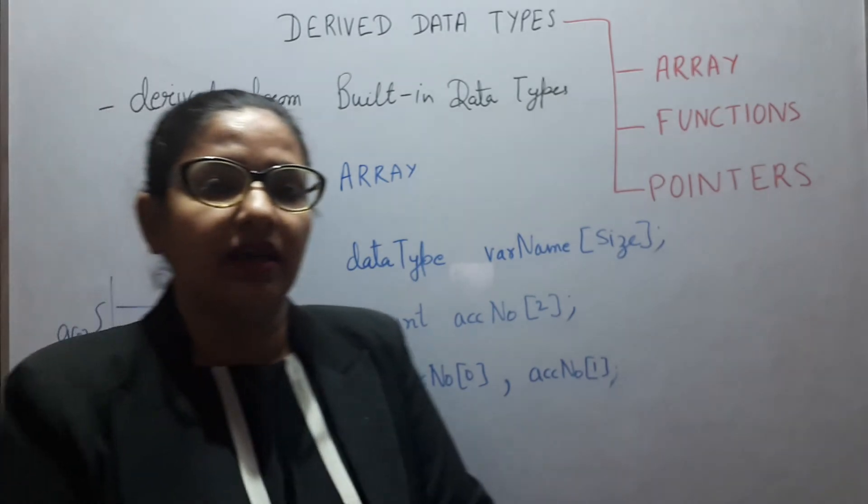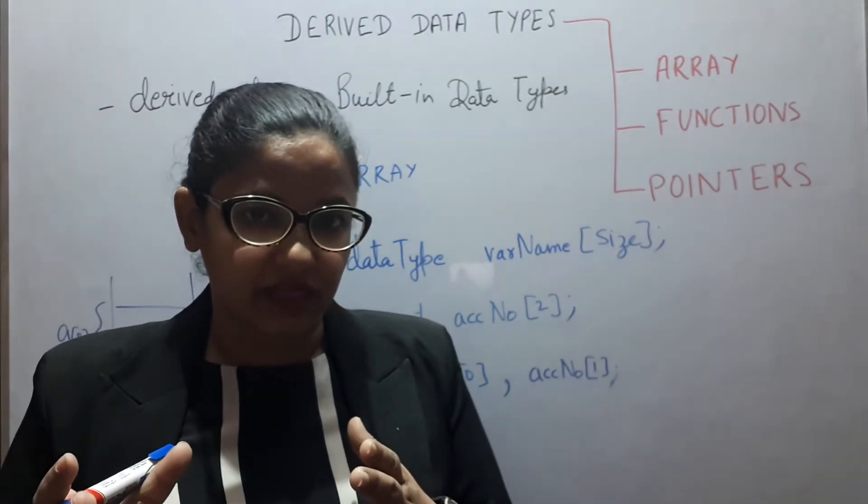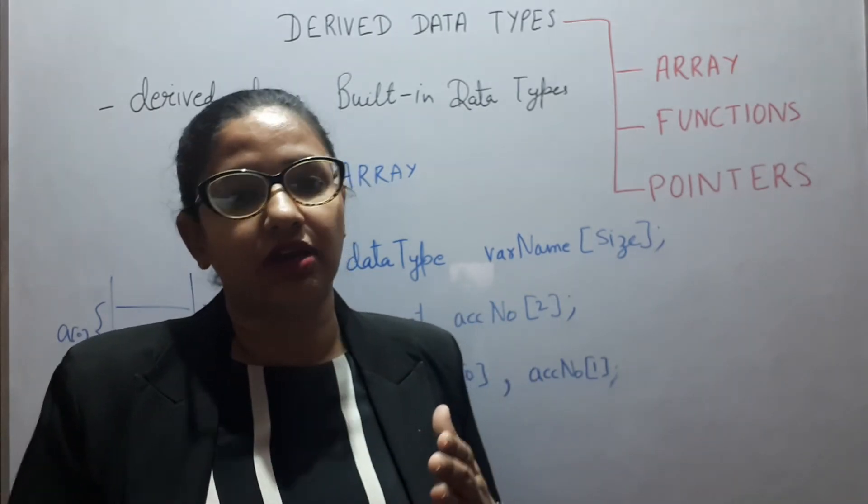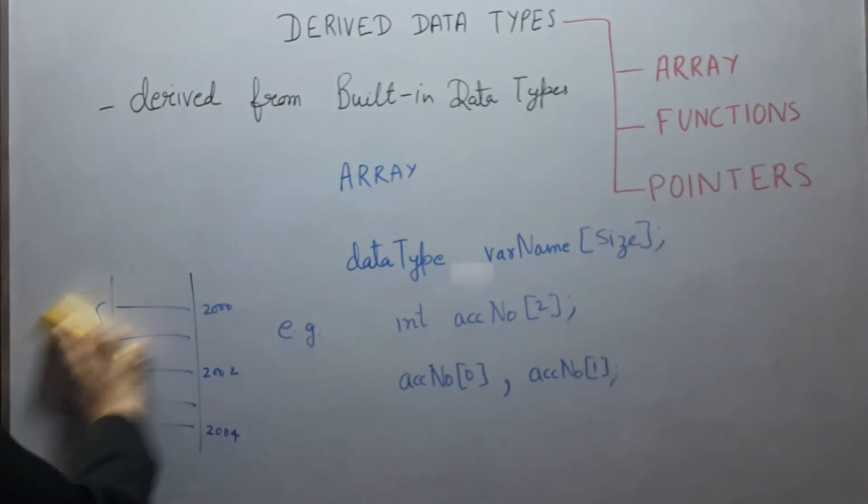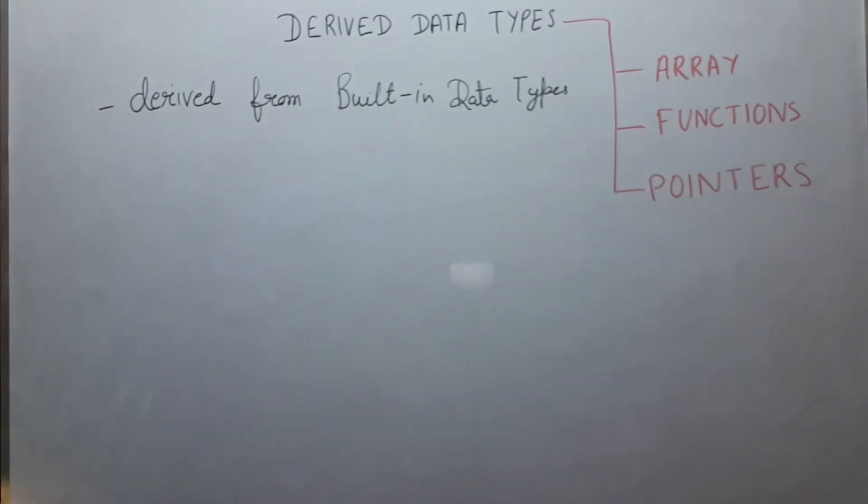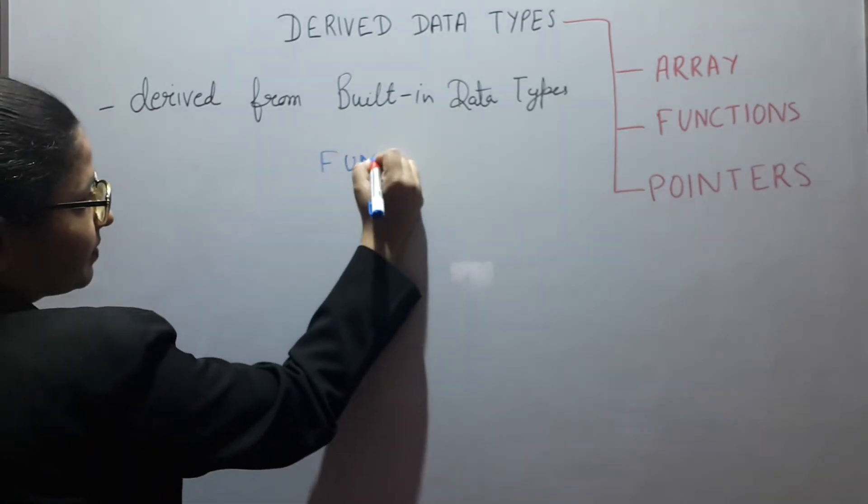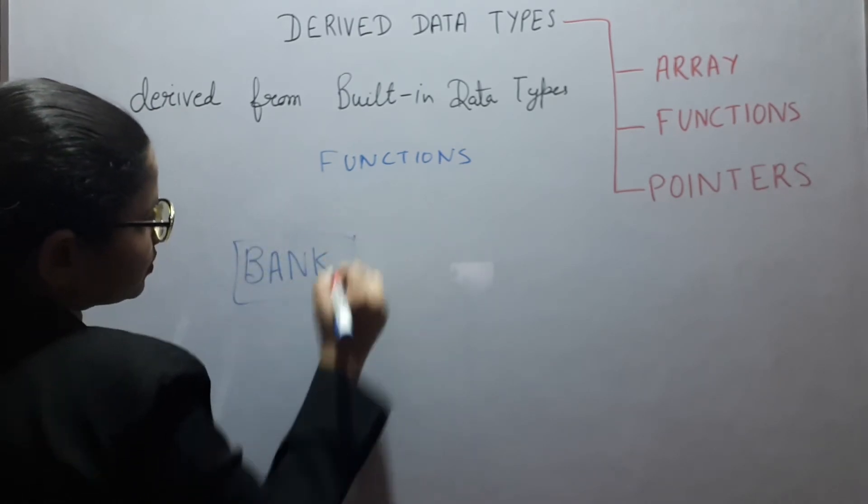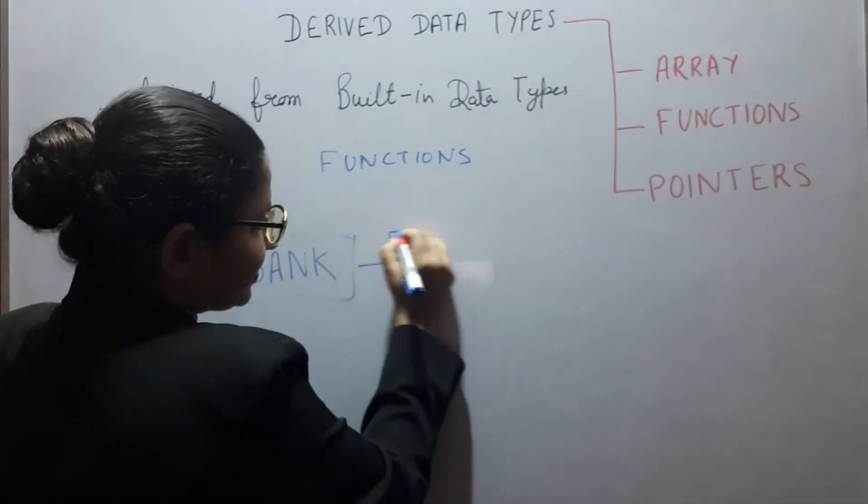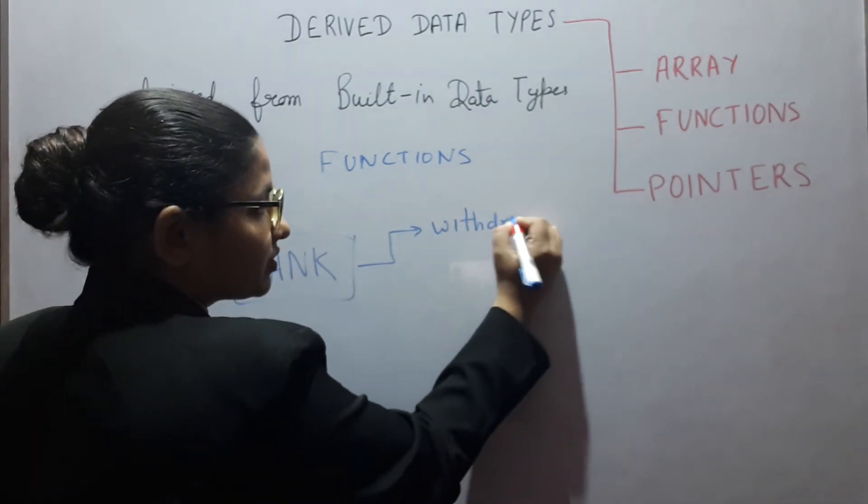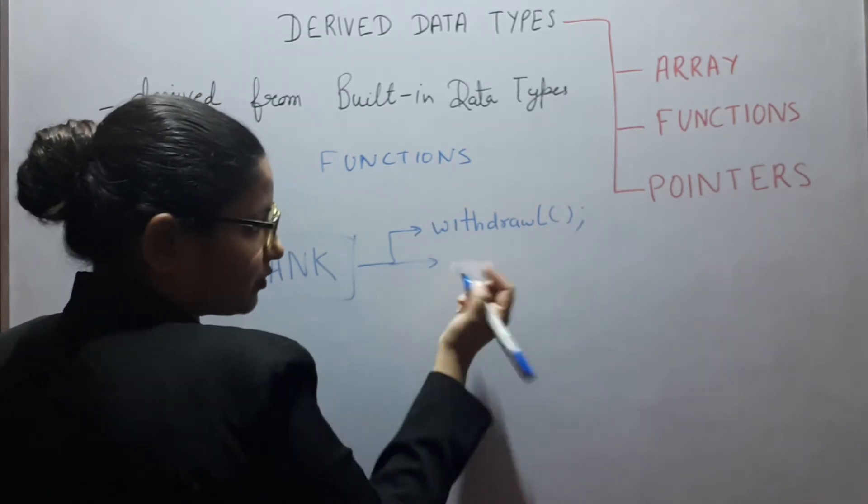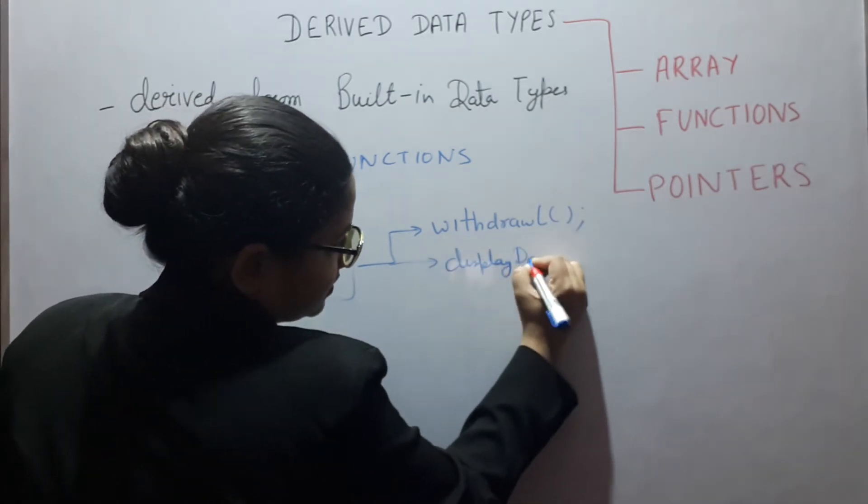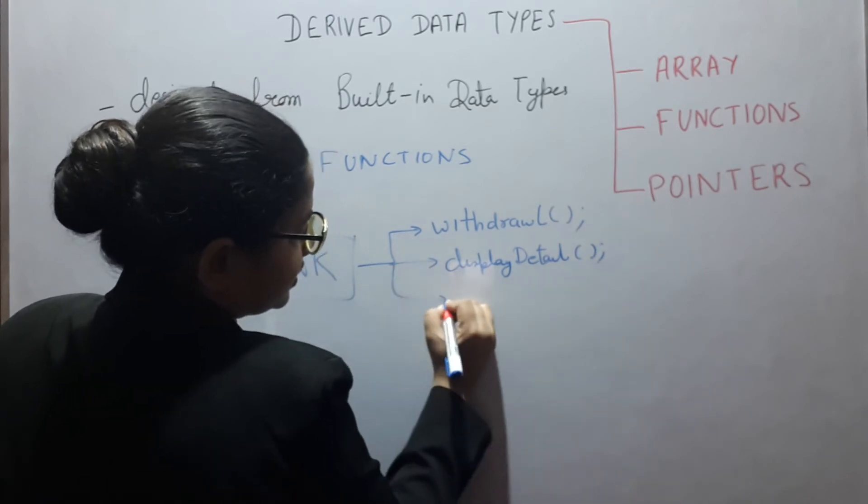Next point is functions. When we are having bigger programs, we used to divide these bigger programs into smaller sub-programs. For example, if I have to do coding for this bank, I can divide this bank program into smaller sub-programs like withdrawal, display details, and deposit.